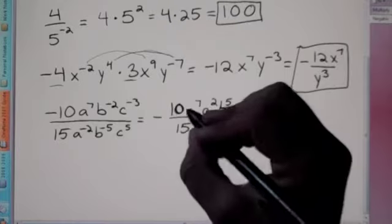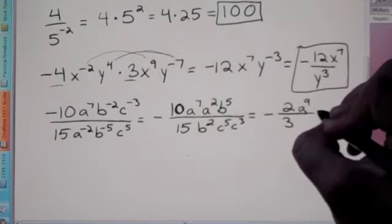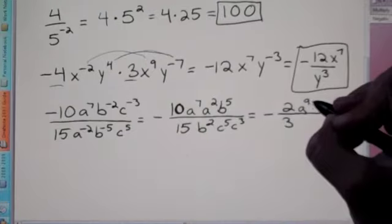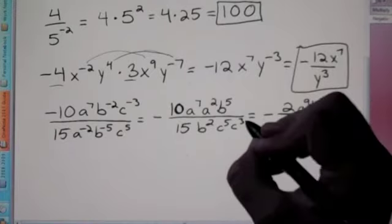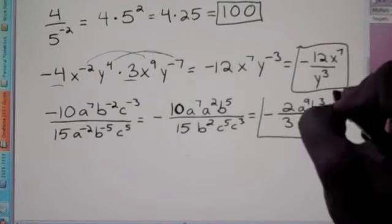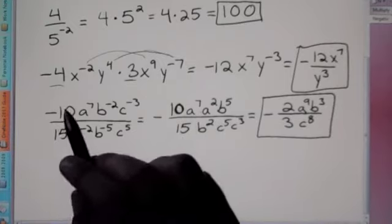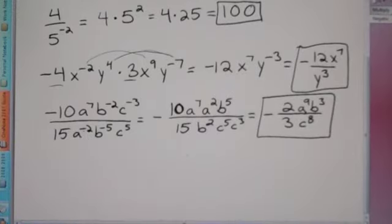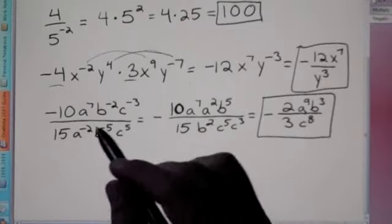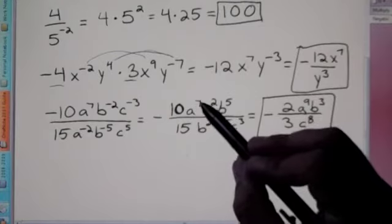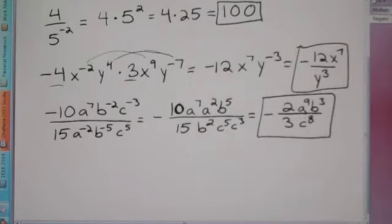Now deal with the variables. We have a to the 7th times a to the 2nd — add the exponents, giving a to the 9th. The b's: 5 on top and 2 on bottom, which leaves b to the 3rd on top (5 minus 2 is 3). For the c's, both positives are on the bottom: 5 plus 3 is 8, giving c to the 8th. So the final answer is negative 2a⁹b³ / 3c⁸. Reduce coefficients, switch negative exponents to positive, then combine: 7 plus 2 is 9, 5 minus 2 is 3, 5 plus 3 is 8.